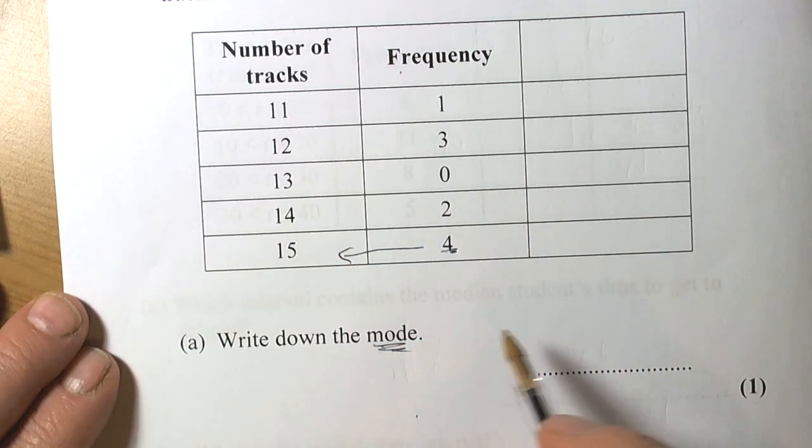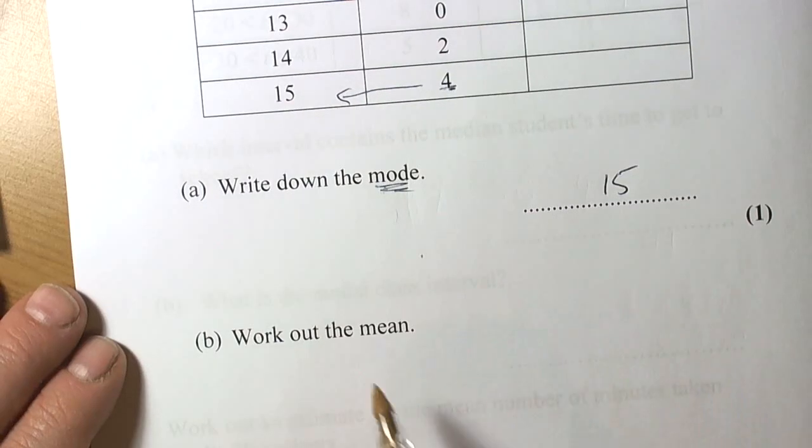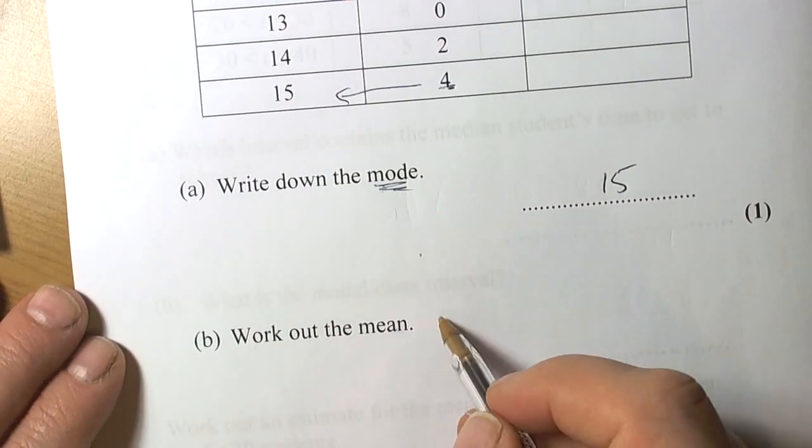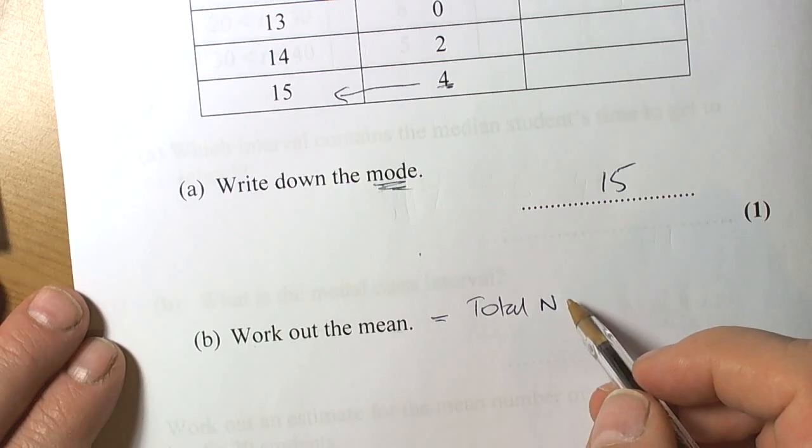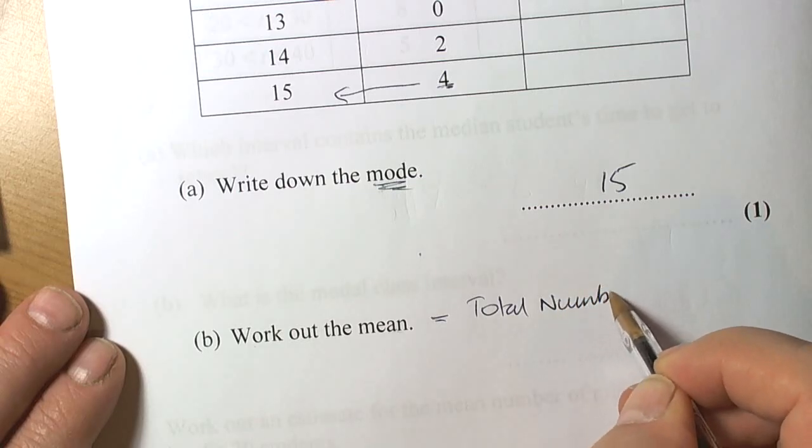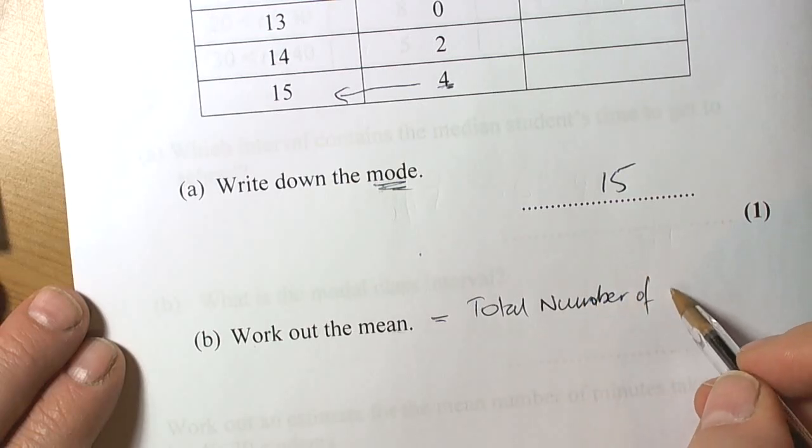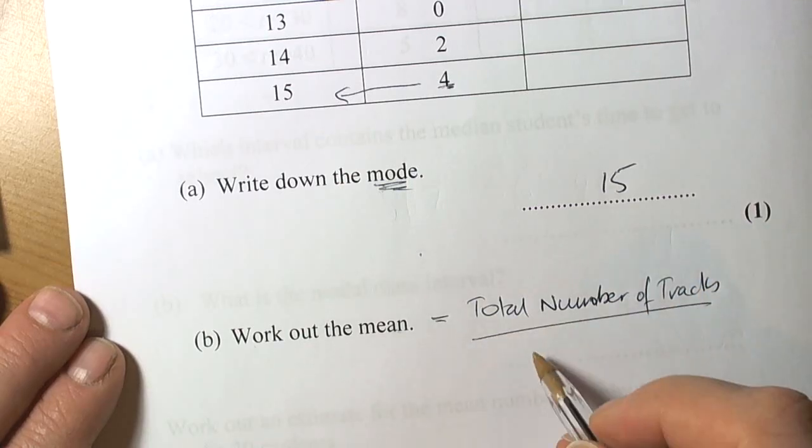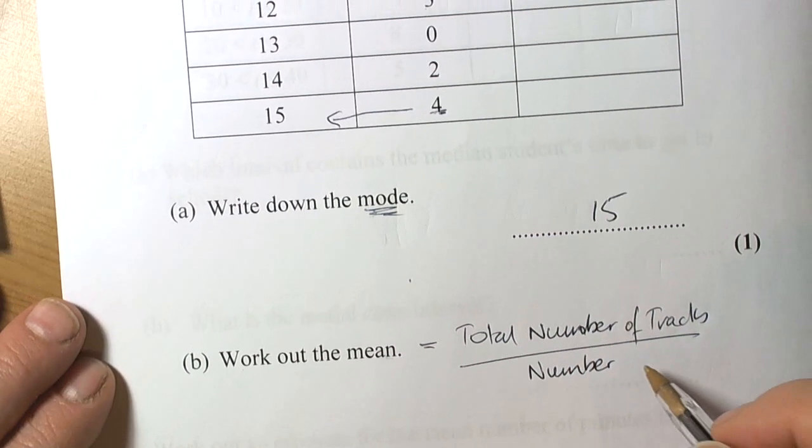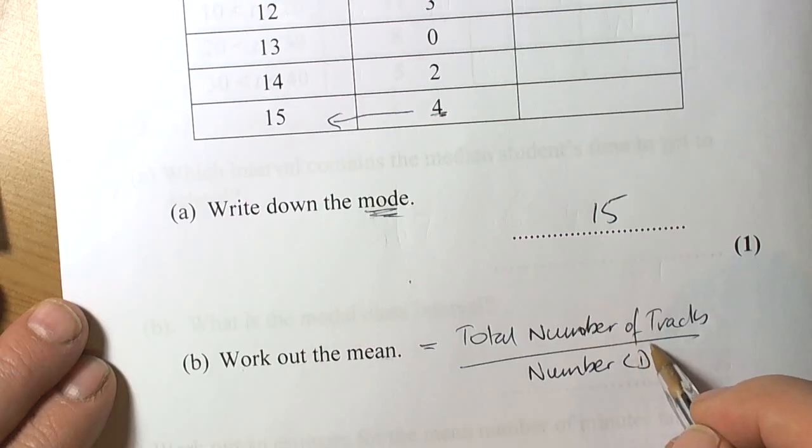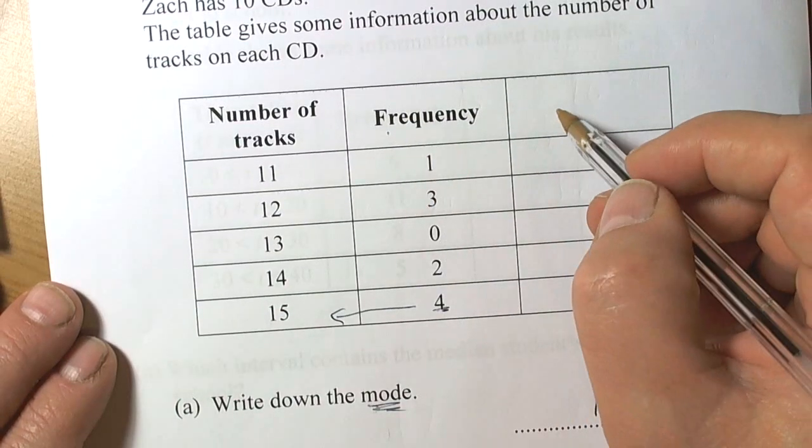To work out the mean, remember it's about the total. This is the total number of tracks divided by the number of CDs. To get the total number of tracks, we need to fill in an extra column to help us see this clearly.